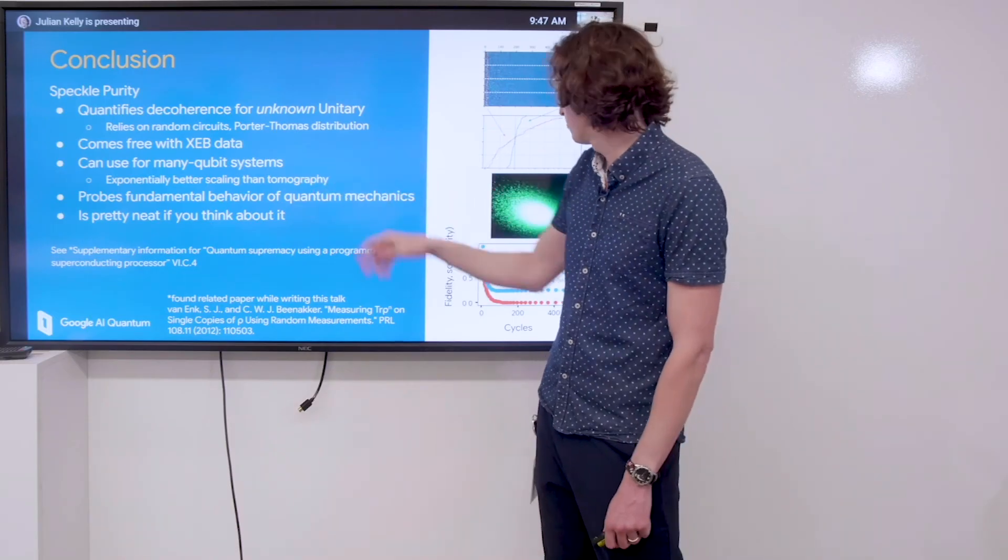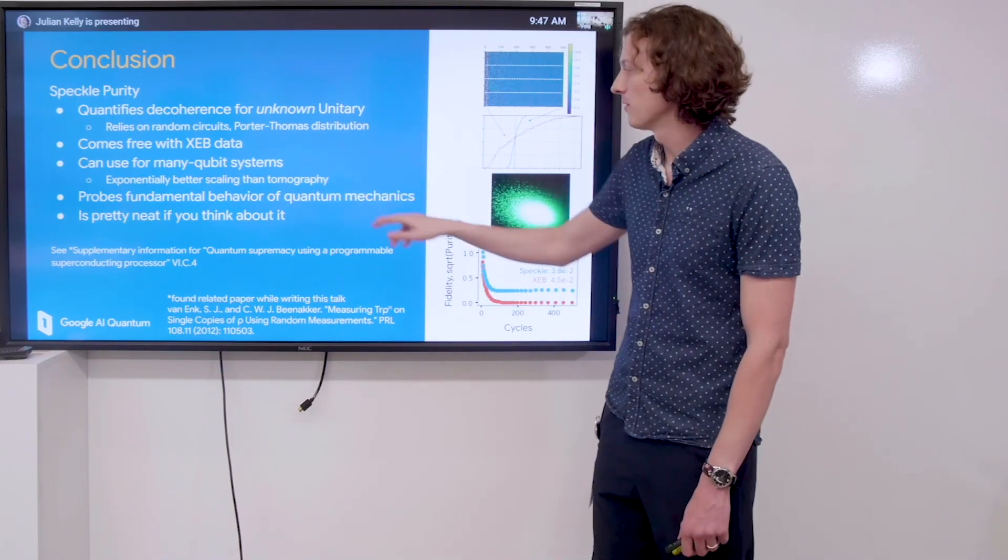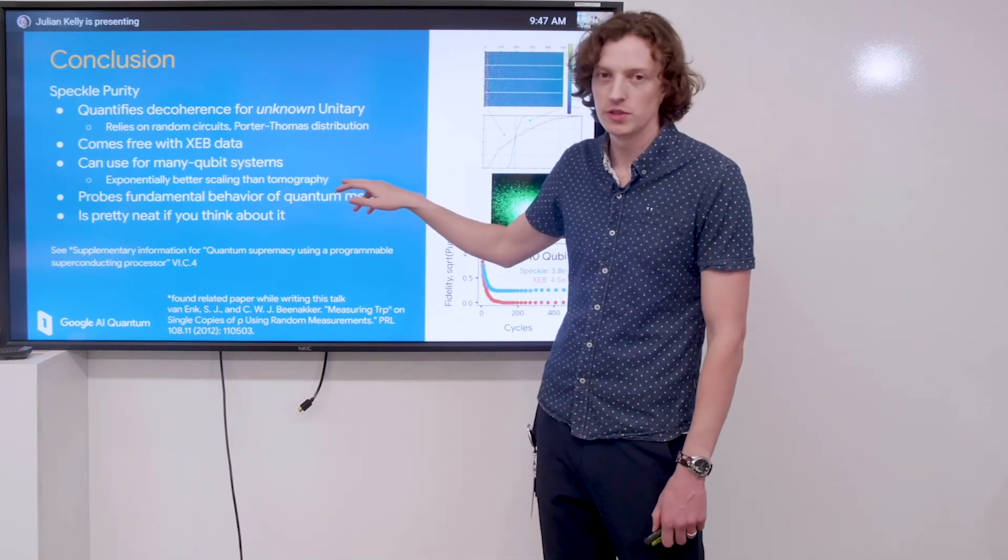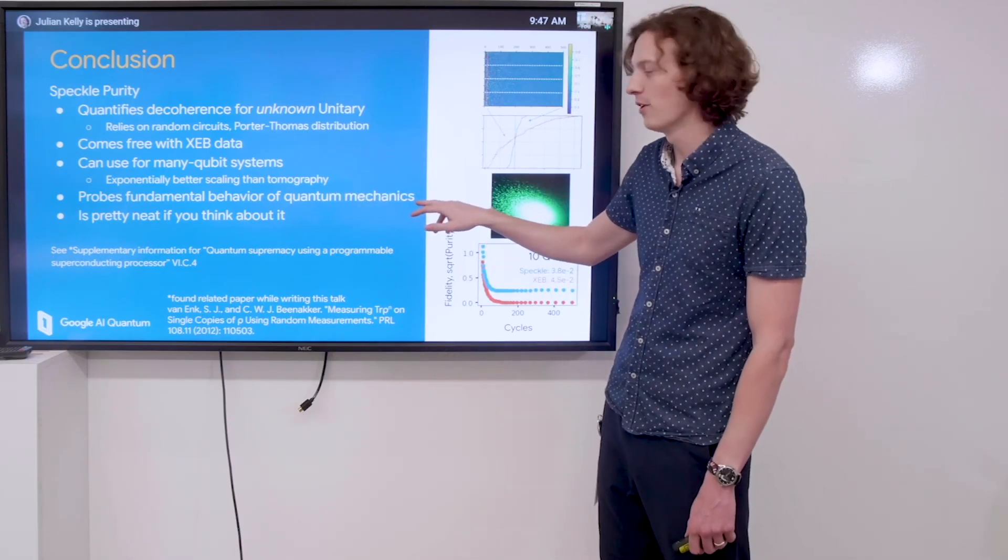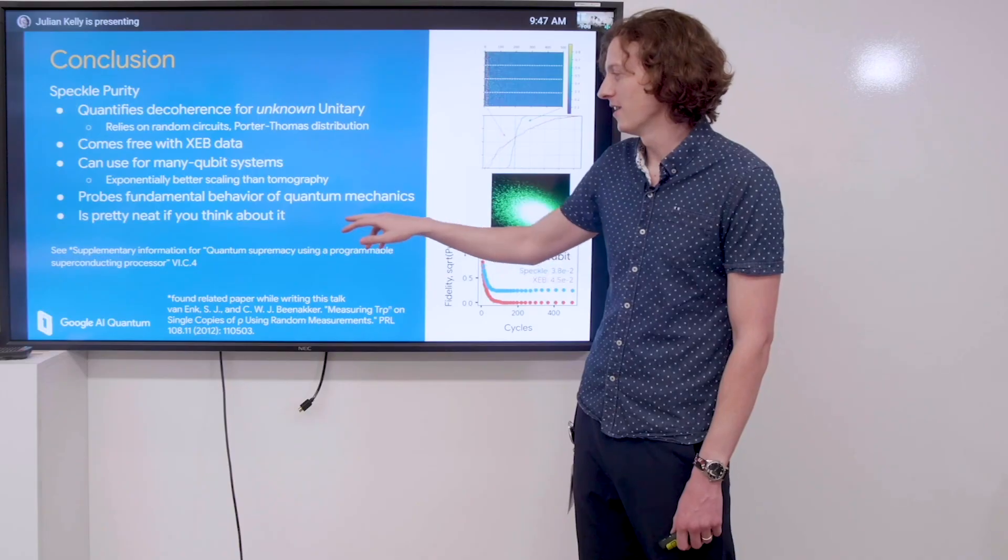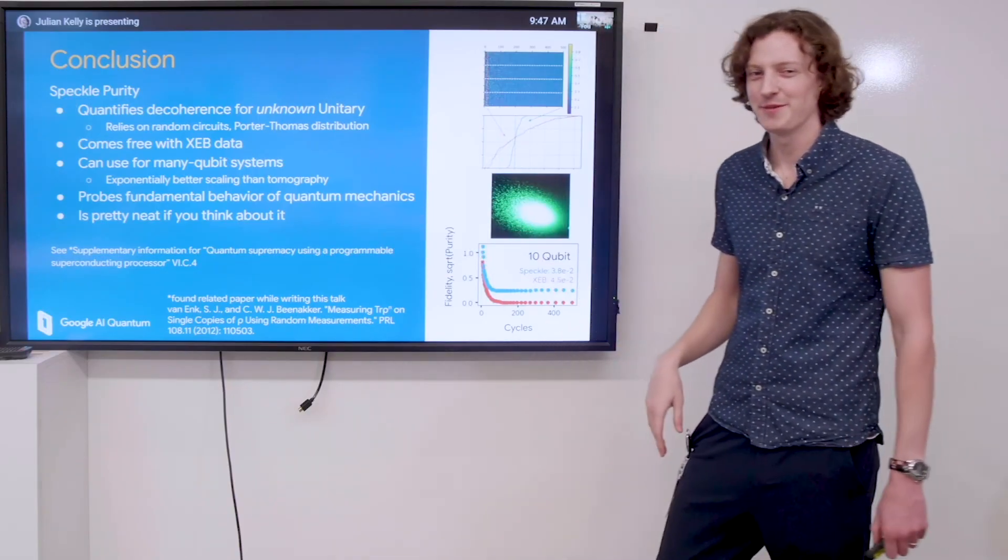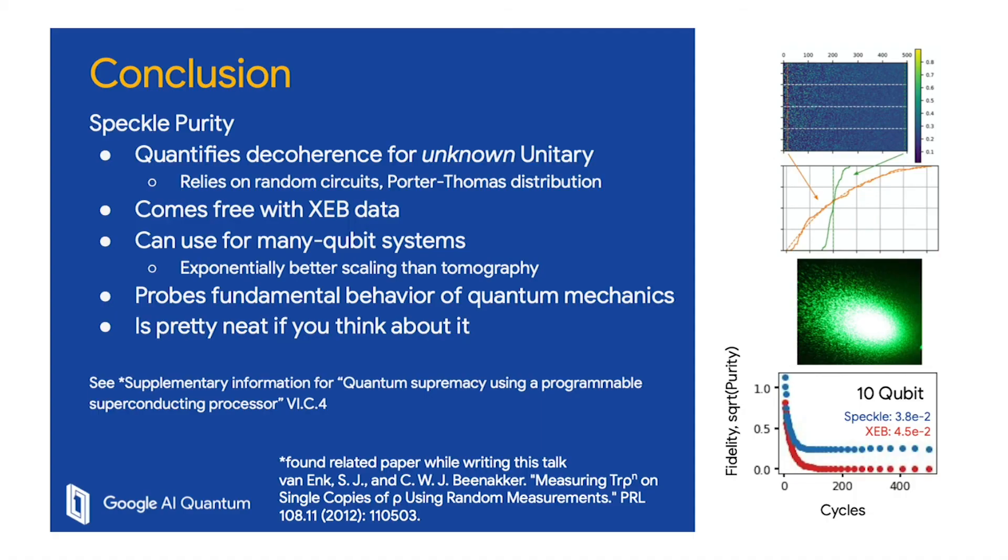We can use it for any qubit systems—we showed up to 10 here. There's exponentially better scaling than doing full state tomography. It probes this fundamental behavior of quantum mechanics, and it's pretty neat if you spend some time thinking about it. I want to point out that we have a discussion of this in the supplemental of the quantum supremacy publication, and I also found this nice paper that talks about a lot of similar concepts from 2012.